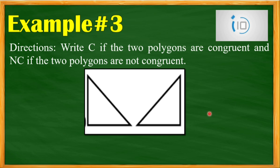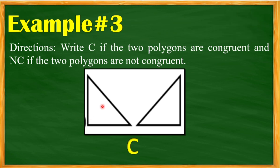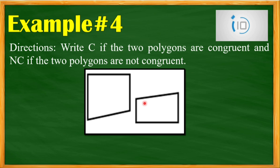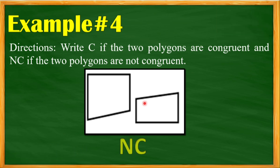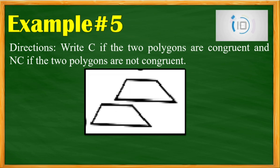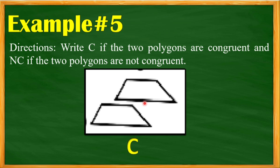For example number three, you have 10 seconds. Timer starts now. Time's up. The correct answer is C — if you flip this one onto this one, they are the same. Example number four — time's up — the correct answer is NC. For number five — time's up — the correct answer is C. Very good. If you slide them together, they have the same size and shape.